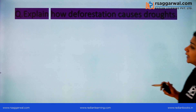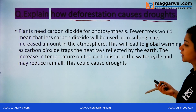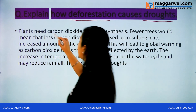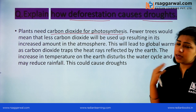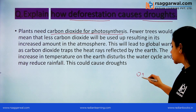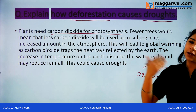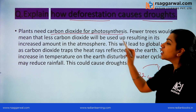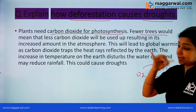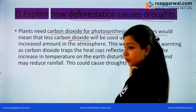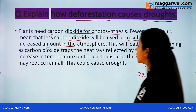Next question: Explain how deforestation causes droughts. Plants need carbon dioxide for photosynthesis. We release CO2, and plants take it in — it is a cycle. Fewer trees means less carbon dioxide is absorbed, so CO2 levels increase in the atmosphere. This leads to global warming as carbon dioxide traps heat rays.